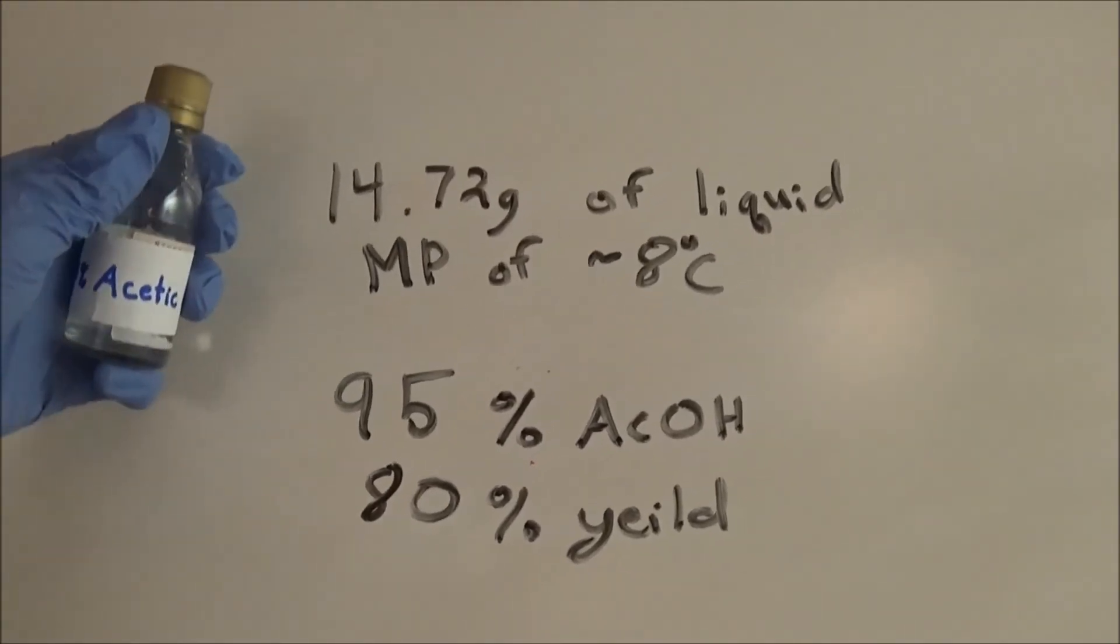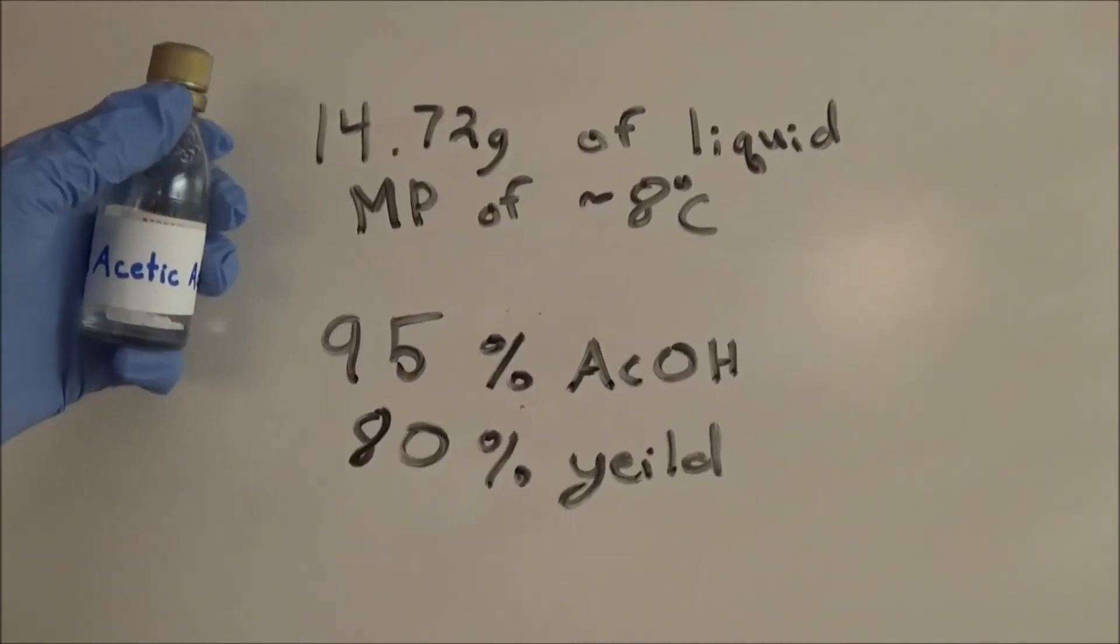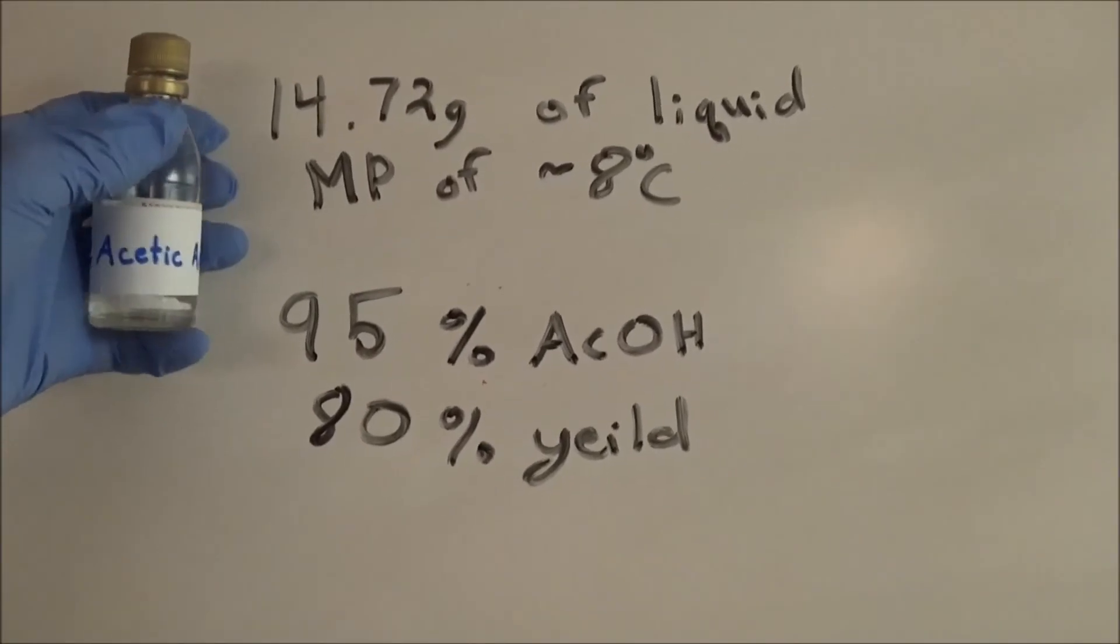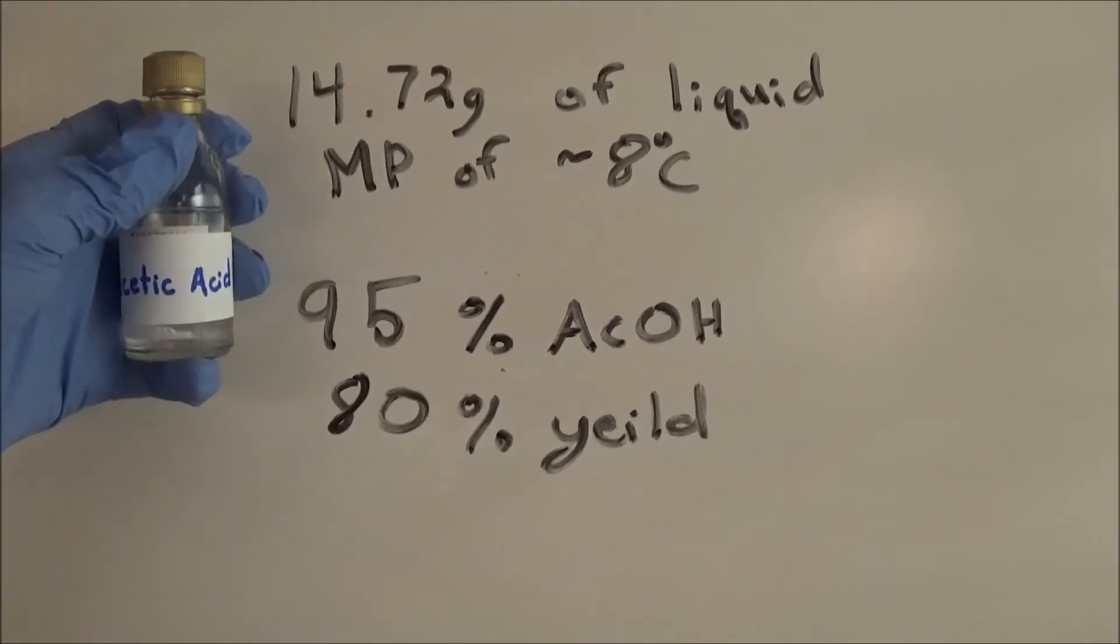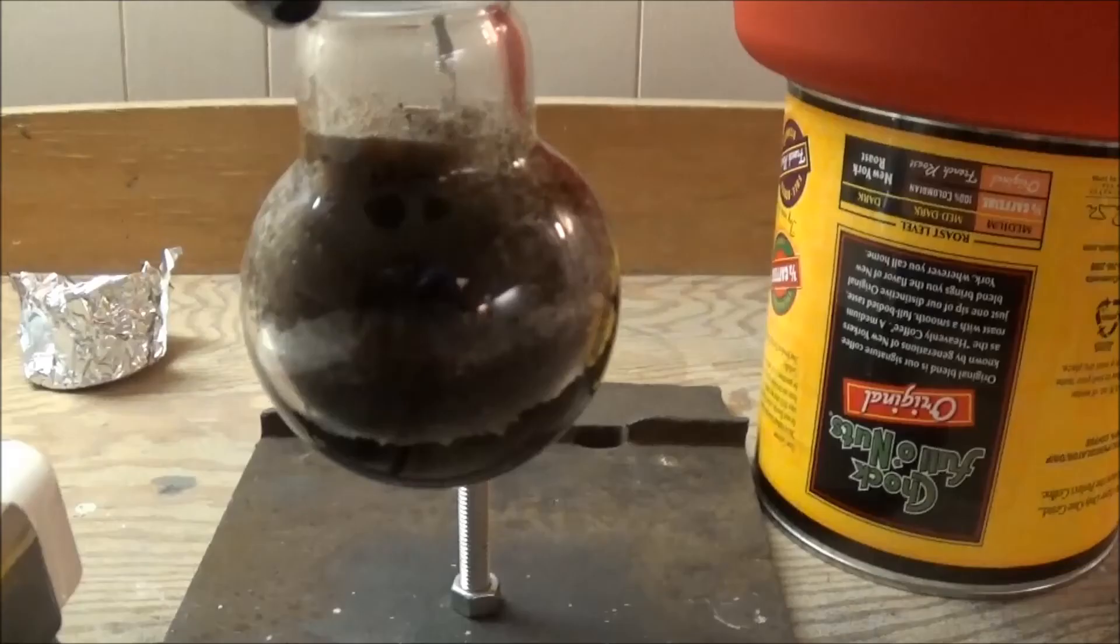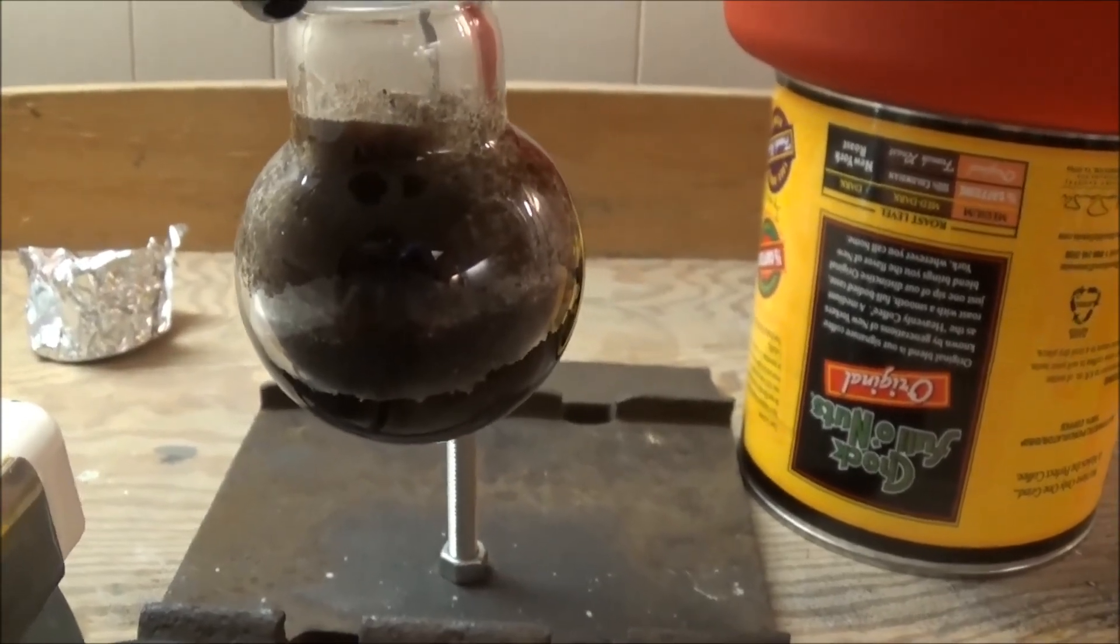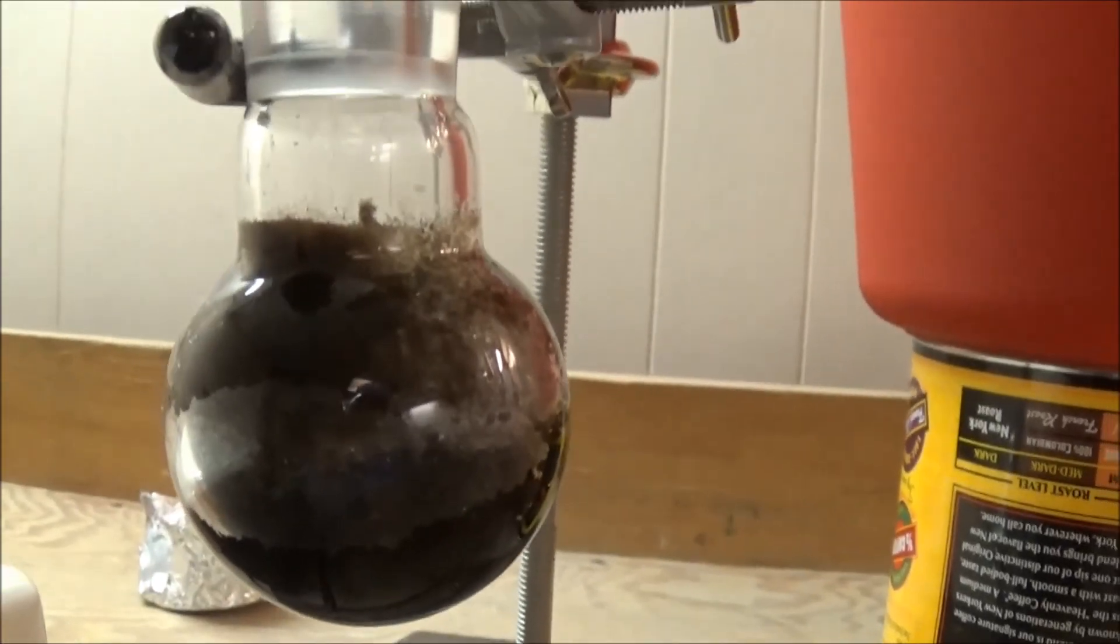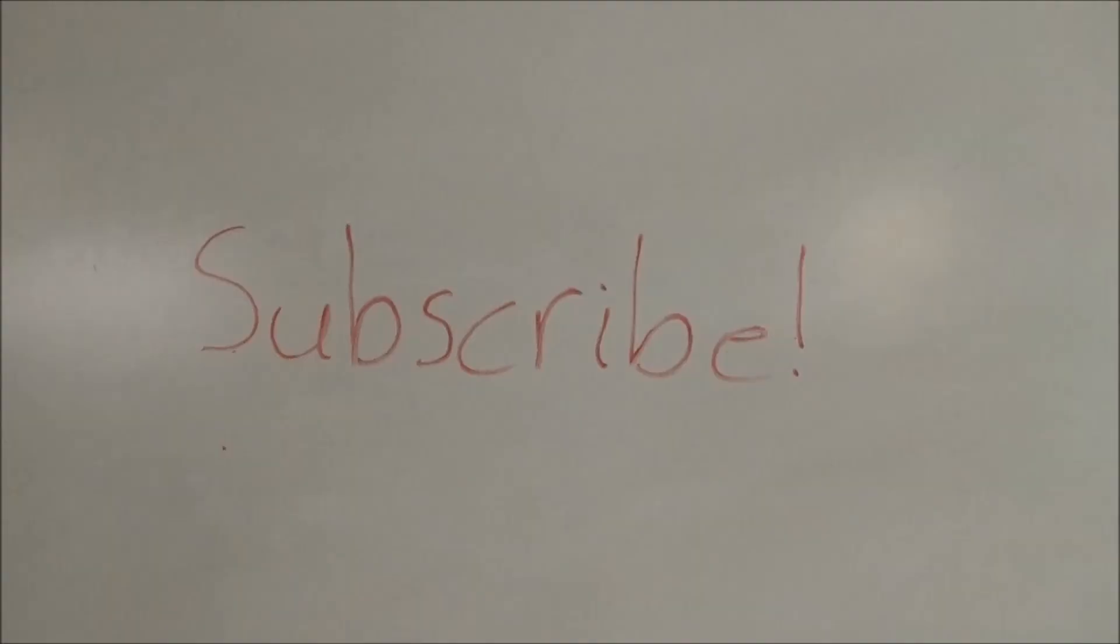The product is 14.72 grams of a colorless liquid with a melting point of 8 degrees Celsius. 8 degrees Celsius corresponds to it being 95% acetic acid, and that means I got an 80% yield. The other 20% of the acetic acid is trapped somewhere in this very dirty round bottom flask that's going to be difficult to clean.